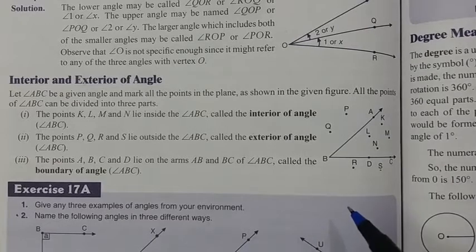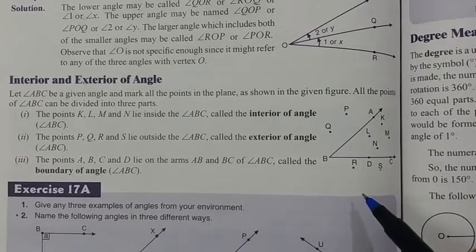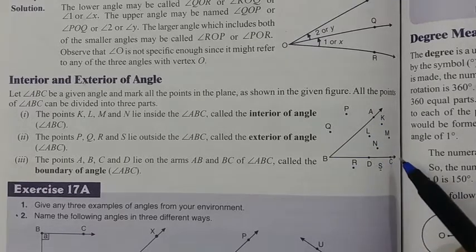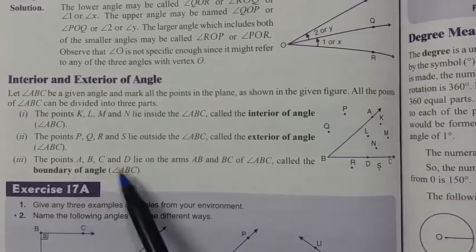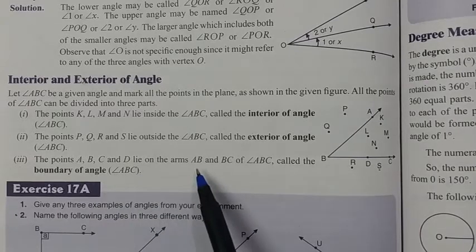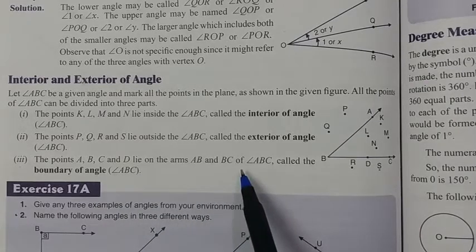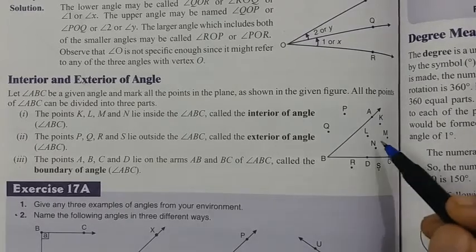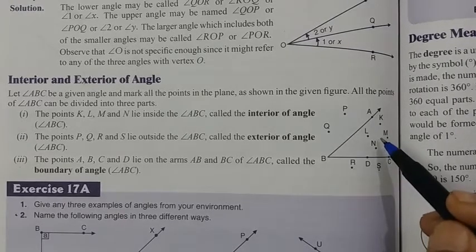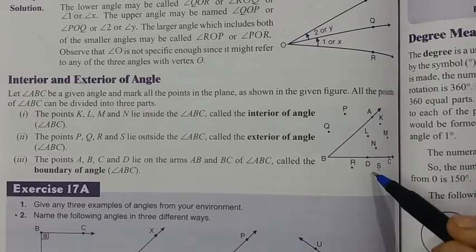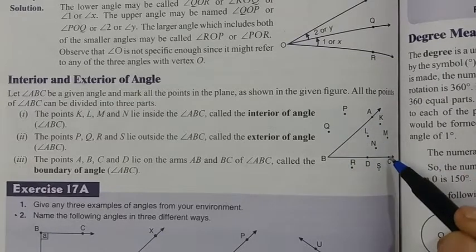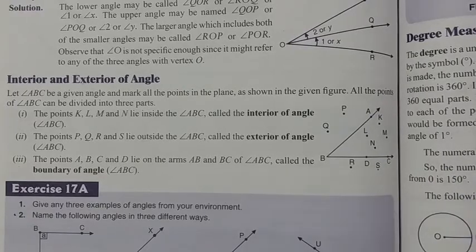Is it clear? Now start Exercise 17A. Points A, B, C, D lie on lines AB and BC of the angle — so they are called the boundary of the angle. The points inside the angle are the interior points. The points outside the angle are the exterior points. And those that lie on the lines of the angle are known as the boundary of the angle.